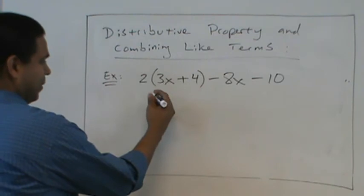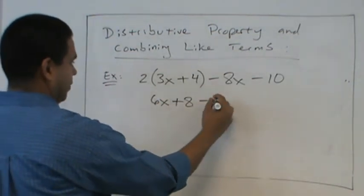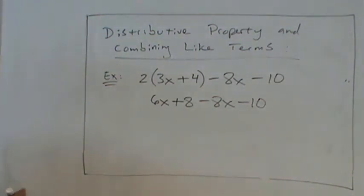So 2 times 3, 6x. 6x. Plus 8. Plus 8. Plus 8. And then minus 8x. Minus 8x. Minus 10. Okay.